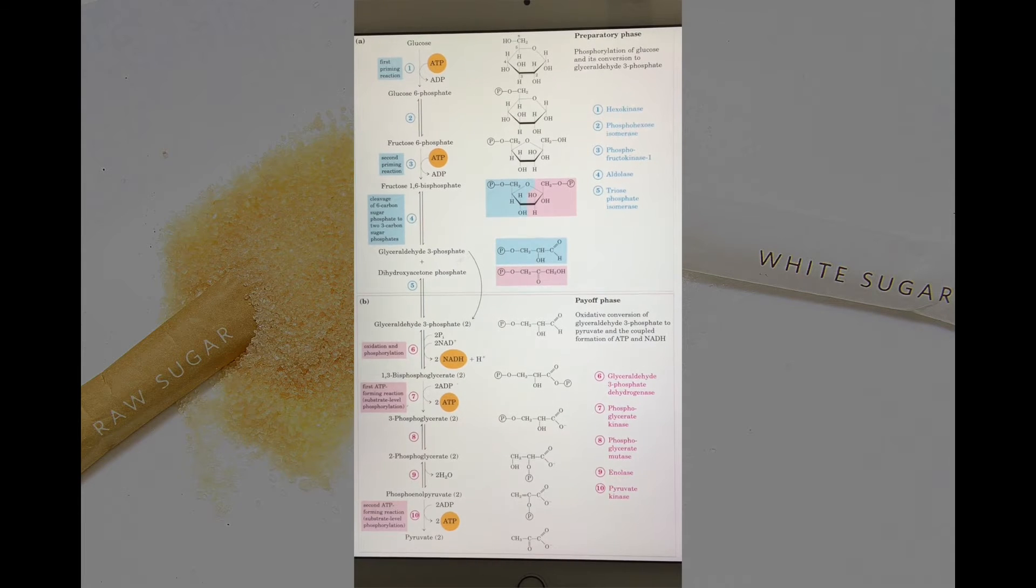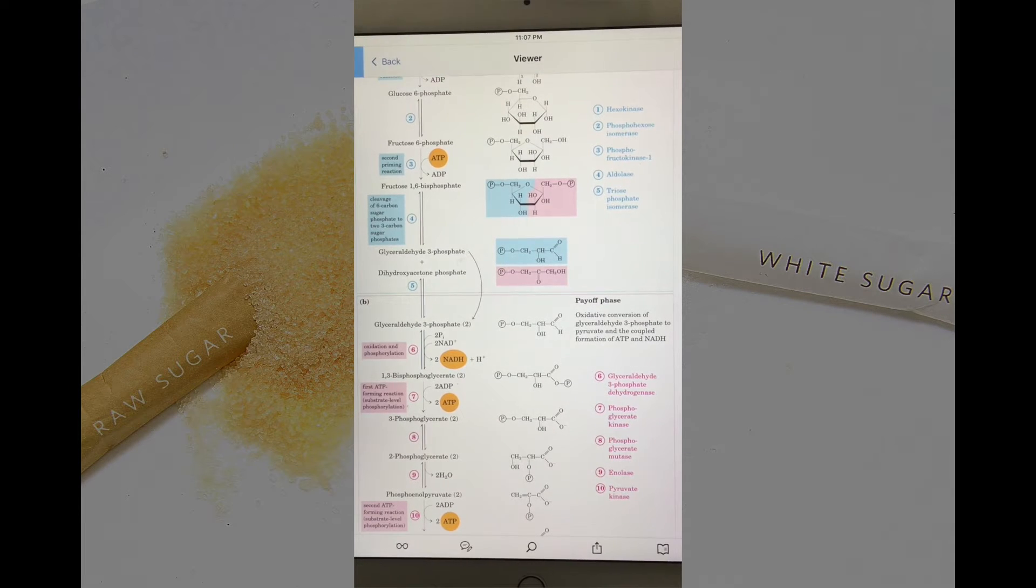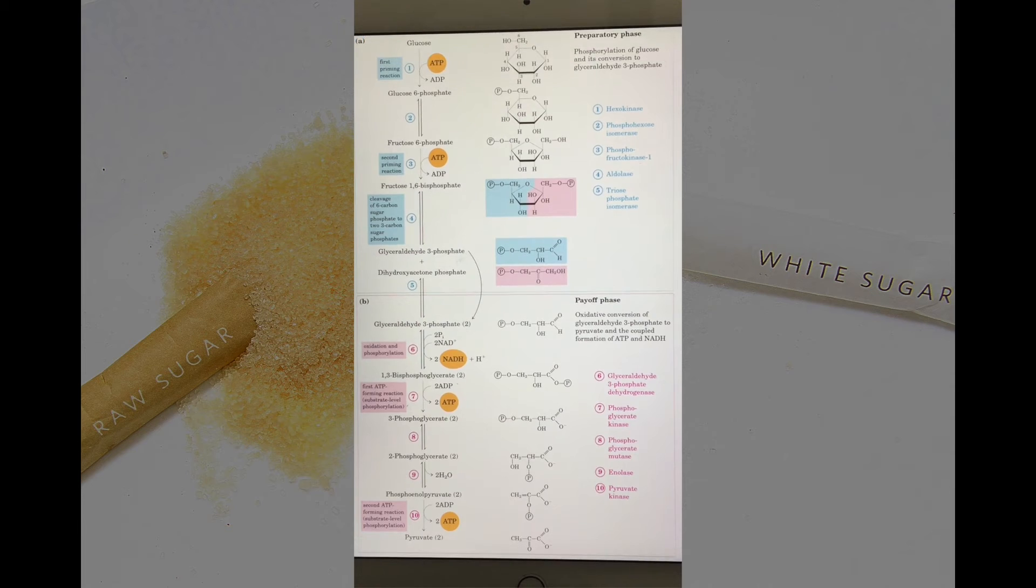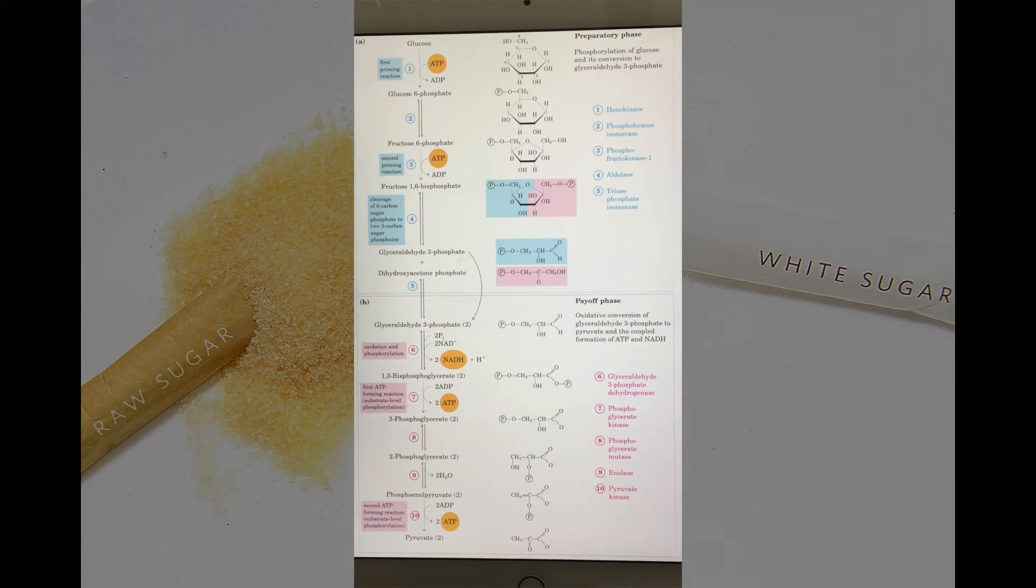So why is the cell doing this, breaking down glucose in a sequential stepwise manner to get pyruvate, and whatever energy present is getting converted and released in the form of ATP? Why doesn't it actually break it down at once?